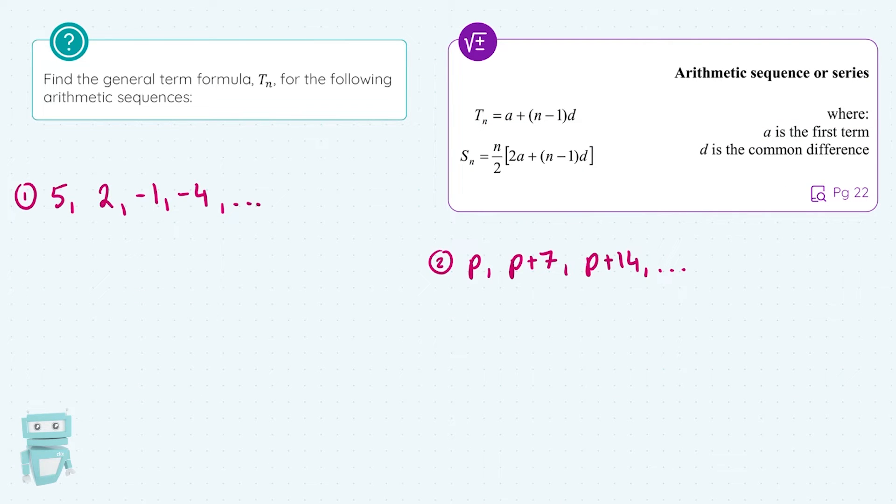If we tackle this question, we're asked to find the general term formula TN for the following arithmetic sequences. So first up, I have 5, 2, minus 1, and minus 4. Now, I have my TN formula here on page 22 in the logs. I know I need to know what A is and what D is. A is the first term, so that's really simple. We're saying A equals 5.